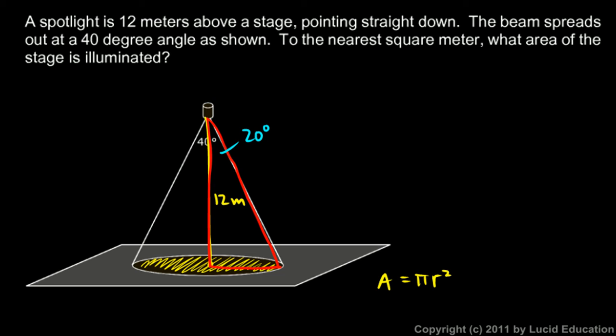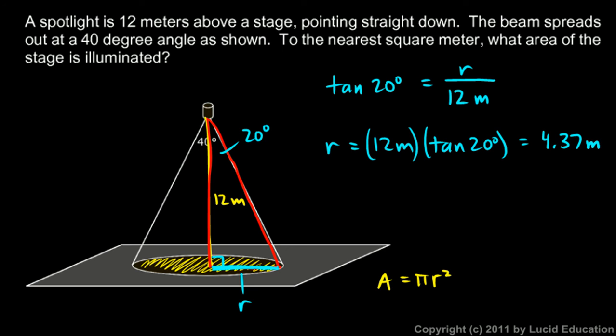We need to find r, and r will be this side down here of this triangle. That's my radius r. We can find that by using this right triangle. So I know that the tangent of 20 degrees will be the opposite side, that's r, divided by the adjacent side, which is 12 meters. Tangent of 20 degrees is r over 12 meters, so r is 12 meters times the tangent of 20 degrees. And on the calculator, that comes out to 4.37 meters.